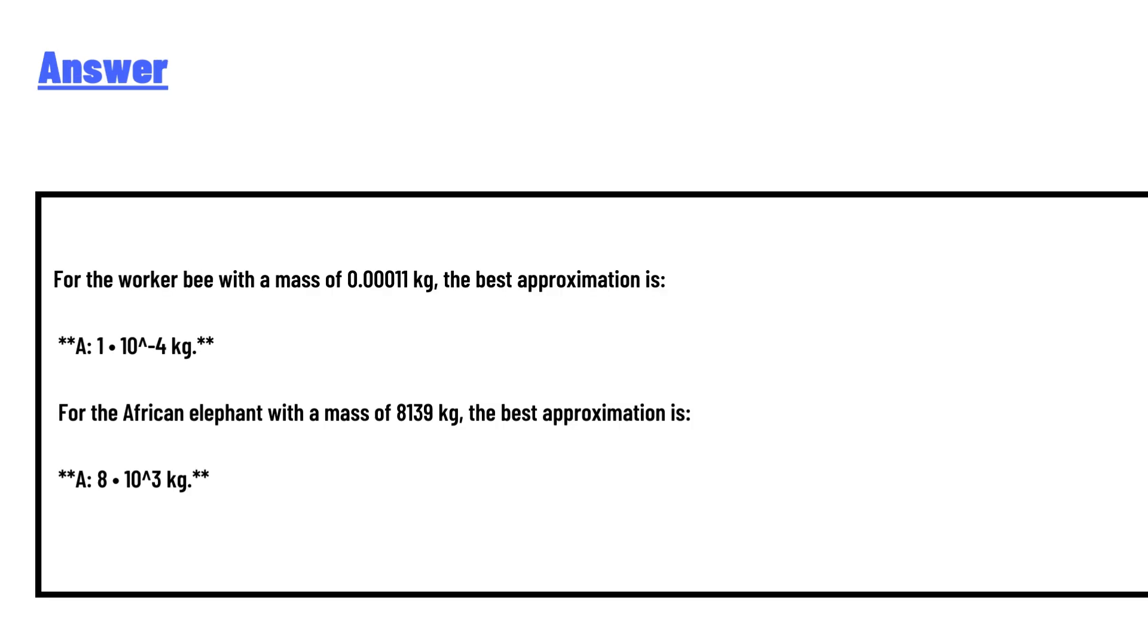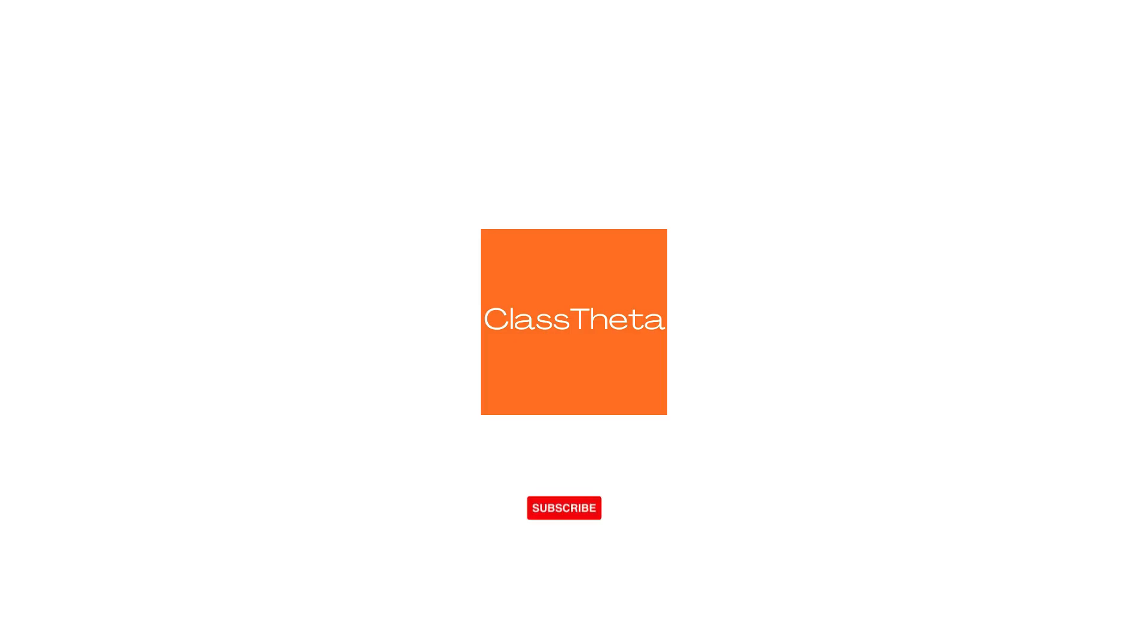For the worker bee with a mass of 0.00011 kg, the best approximation is A: 1×10^-4 kg. For the African elephant with the mass of 8139 kg, the best approximation is A: 8×10^3 kg.